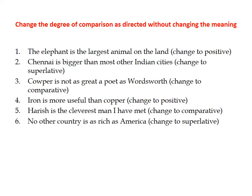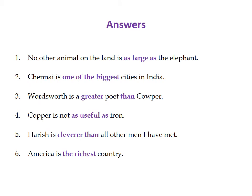Here are the changes. For sentence one, we change to positive using the expression 'as large as.' The complete sentence is: 'No other animal on land is as large as the elephant.' You might think there is an element of comparison in 'as large as,' and in a way you're right, but we have not used the comparative or superlative forms — we've used the positive degree 'large.' That is what counts structurally.